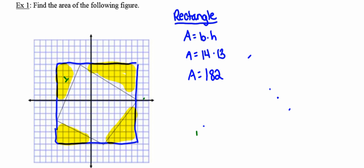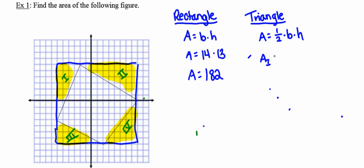I'm going to label the four triangles in the picture with Roman numerals. Once again, I'll specify that I'm now finding the areas of the triangles using the formula one half times base times height. Starting with triangle Roman numeral I, its base and height are 4 and 9. Substituting in one half times 9 times 4, the area of triangle number I is equal to 18 square units.